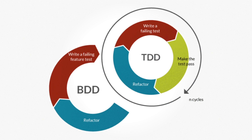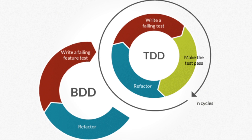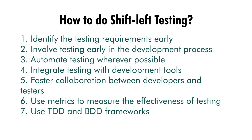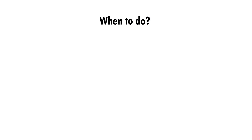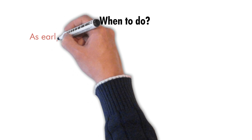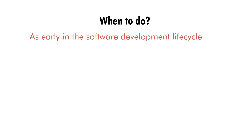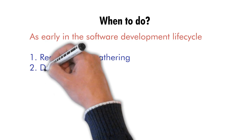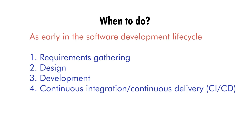Both TDD (Test Driven Development) and BDD (Behavior Driven Development) can help in implementing the shift left testing approach by identifying defects early in the development process. We will cover TDD and BDD in our upcoming videos. As mentioned, shift left testing should be done as early as possible in the software development life cycle — in requirement gathering, design review, code review, continuous integration and continuous delivery processes.